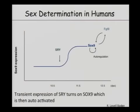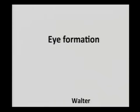Human sex determination is a very similar story. The SRY gene on the Y chromosome gets activated only in males. It turns on SOX9. SOX9 then auto-regulates. The Sertoli cells divide, and that's what makes a male. It's a simple feedback. It's the way it actually works.